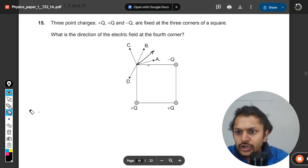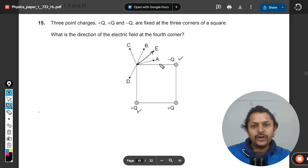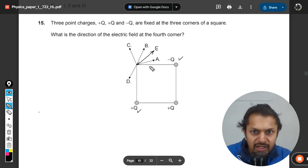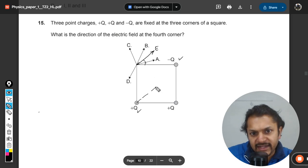So this is the resulting electric field because of this charge and this charge. Obviously, since both of them were equal, this angle was supposed to be 45 degrees. So I can clearly say that this is the diagonal here, so this will be parallel to the diagonal.